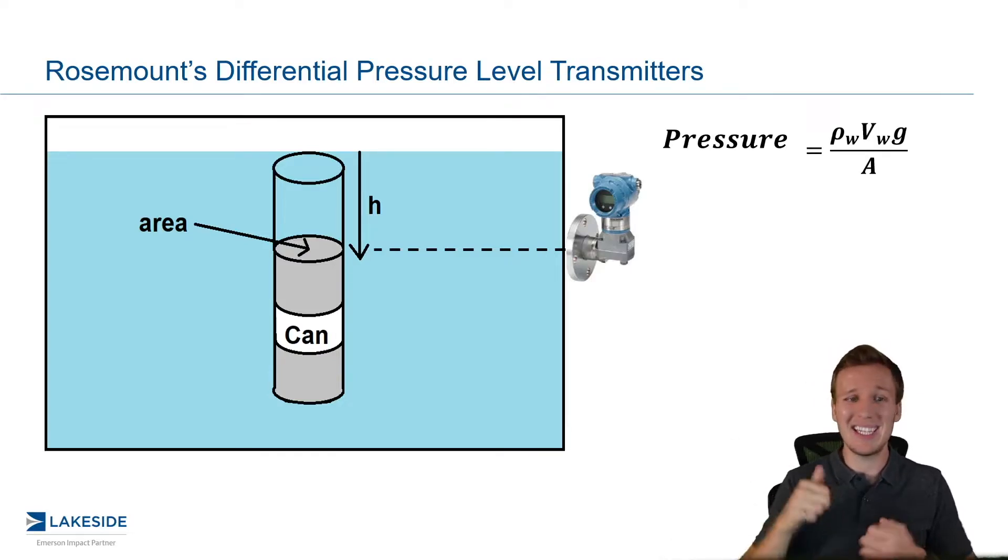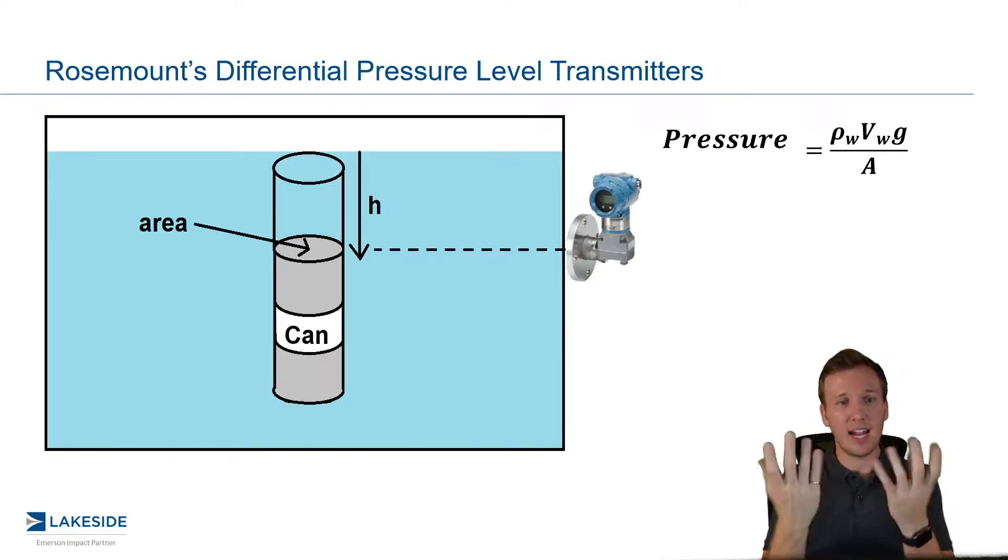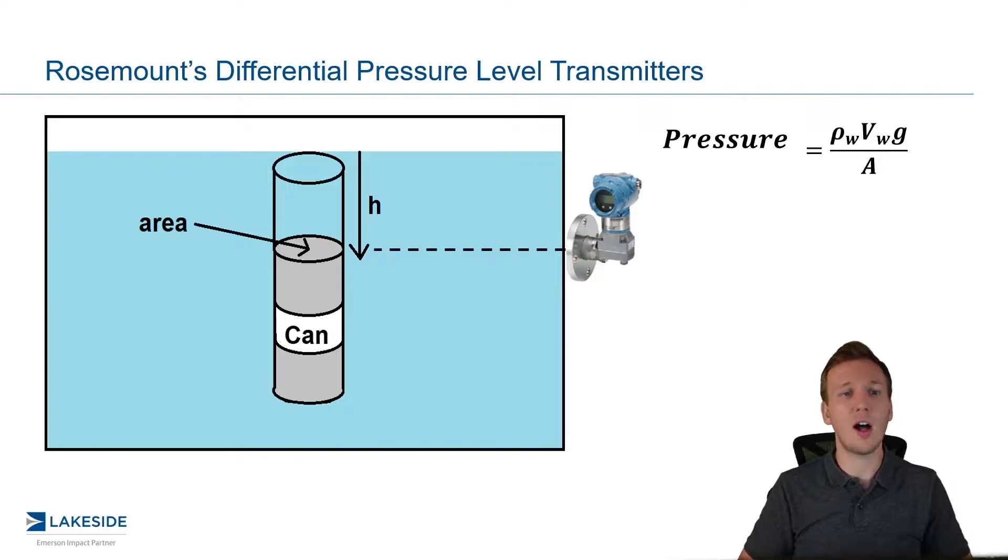This is going to be equal to simply the density of whatever fluid is above it times the volume of the fluid that is above it times the gravitational constant. And then it is on a per area basis, because that's how pressure readings are calculated.